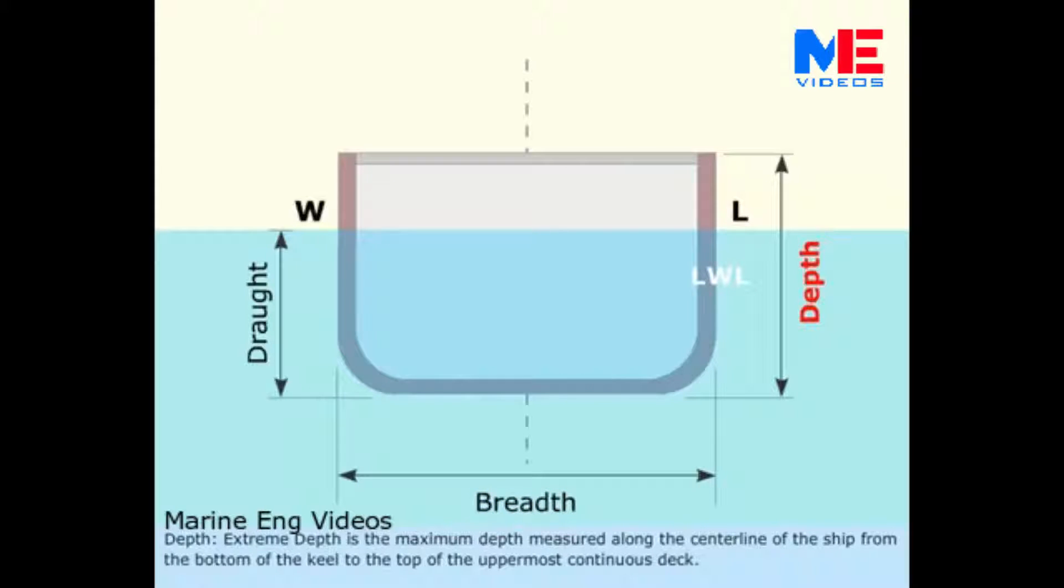Depth. Extreme depth is the maximum depth measured along the center line of the ship from the bottom of the keel to the top of the uppermost continuous deck. Molded depth is the vertical distance measured along the shipside from the top of the keel to the underside of the uppermost continuous deck.